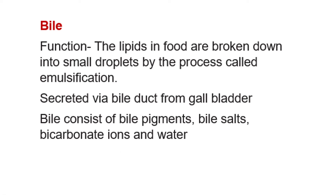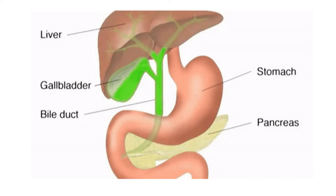Bile is produced in the liver, stored in the gallbladder, and secreted into the small intestine. Bile is really important for lipid digestion because lipids are mostly insoluble in water. Once bile is secreted, the lipids in food are broken down into small droplets by a process known as emulsification, which allows enzymes to act on lipids and start lipid digestion. Bile consists of bile pigments such as bilirubin, bile salts, bicarbonate ions, and water.